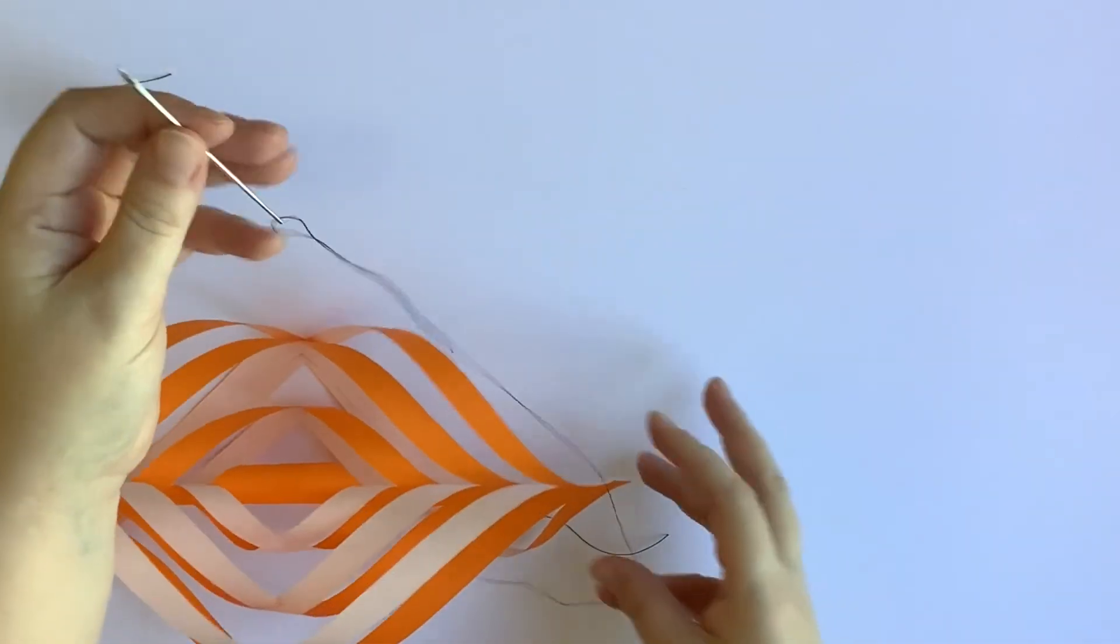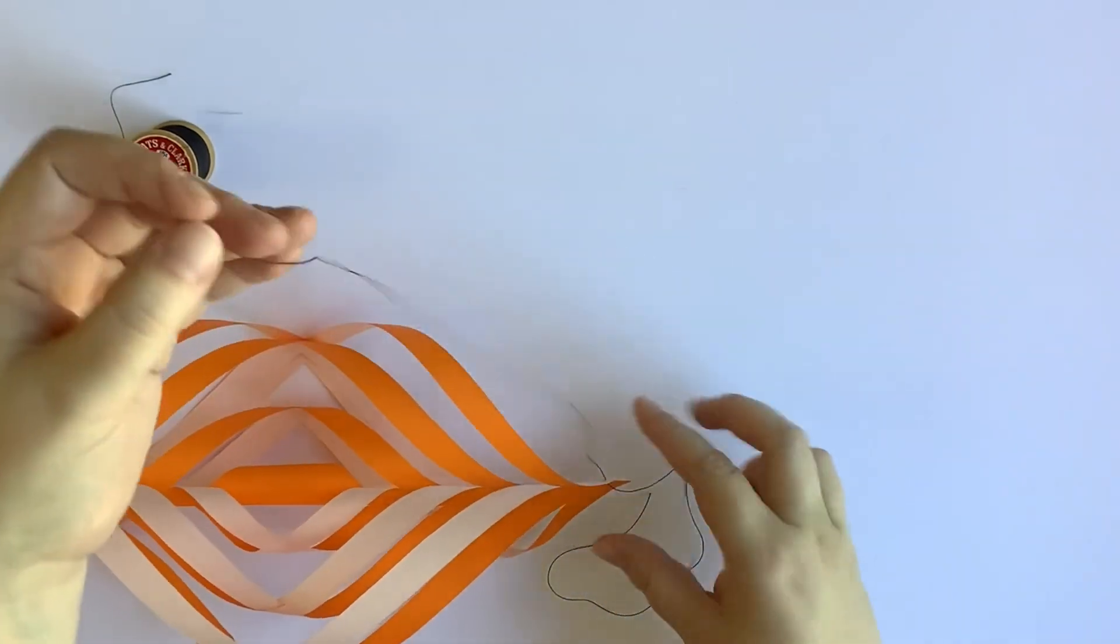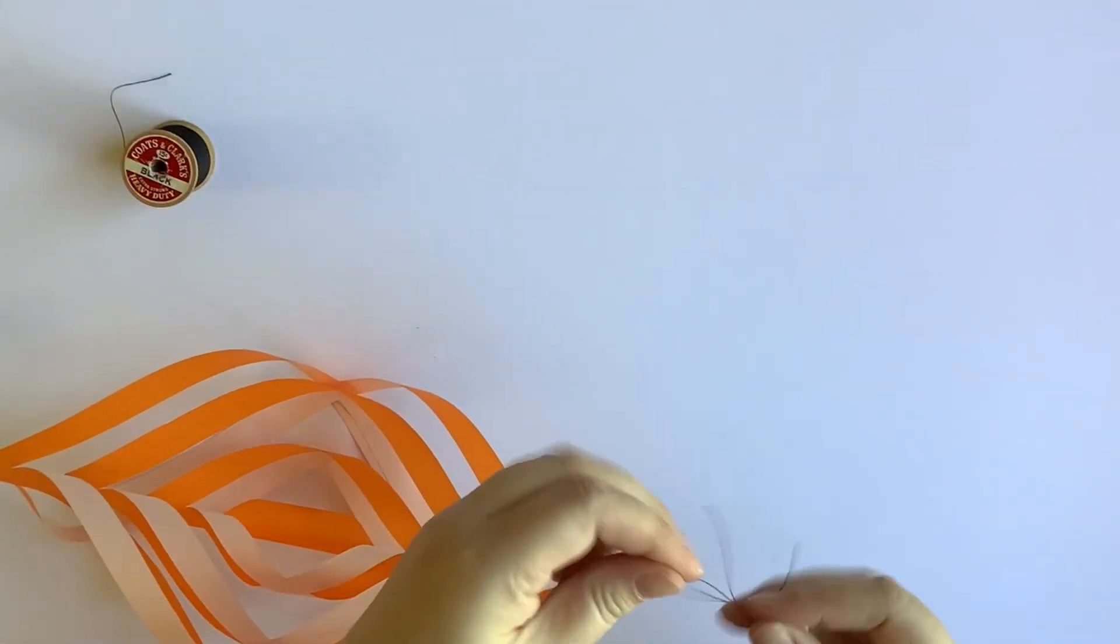Once I've done that I can unthread the needle and tie the string at the top of the wind catcher to finish it.